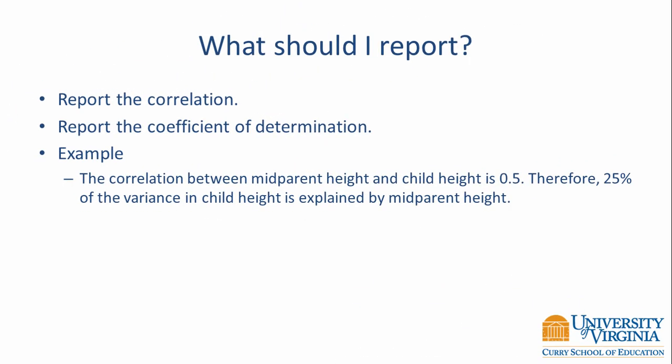When conducting a correlation analysis, there are two statistics you should report: the correlation and the coefficient of determination. For example, the Galton height data had a correlation of 0.5. We would report this as: the correlation between mid-parent height and child height is 0.5, and therefore 25% of the variance in child height is explained by mid-parent height.